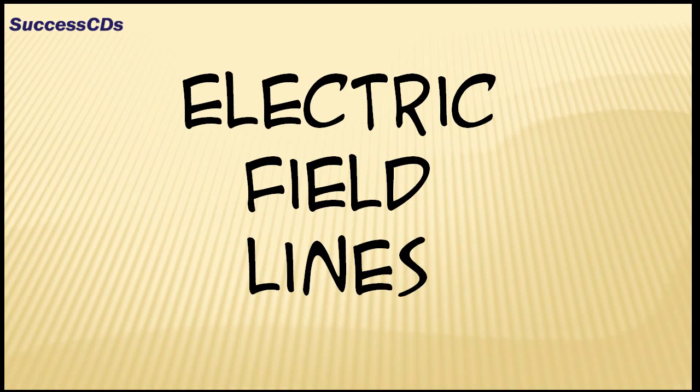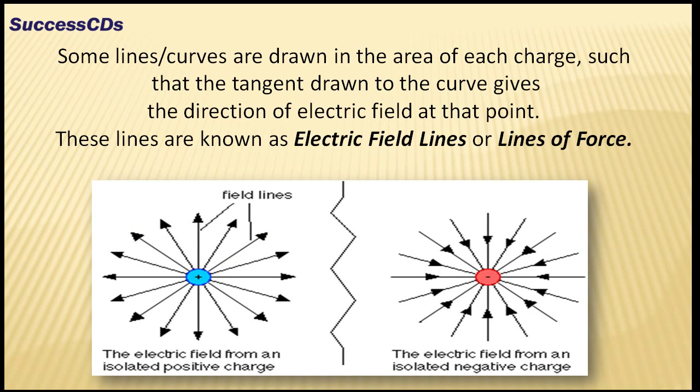Electric field lines: Some lines or curves are drawn in the area of each charge such that the tangent drawn to the curve gives the direction of electric field at that point. These lines are known as electric field lines or lines of force. The figure depicts the electric field from an isolated positive charge and an isolated negative charge.